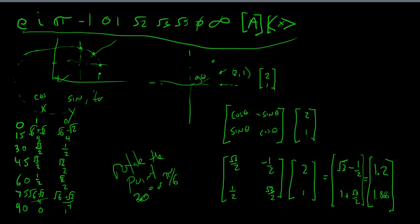We get approximately 1.2 and 1.866. The proof: the magnitude of the original point (2, 1) is the square root of 5, and doing the same calculation here gives a magnitude of the square root of 5. We verify: 1.2 squared plus 1.866 squared equals pretty much 5, so the distance is the square root of 5. Rotation preserves distance.